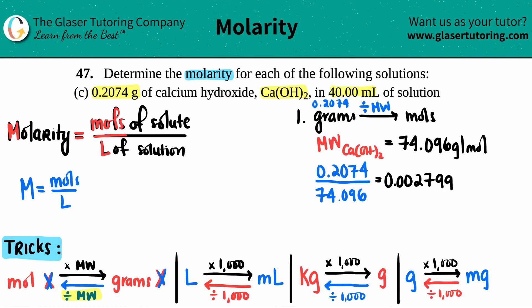0.002799, we can cut it off there. That's now in the unit of moles Ca(OH)2. So we found 0.002799 is the mole value. Now we need to find the liters.